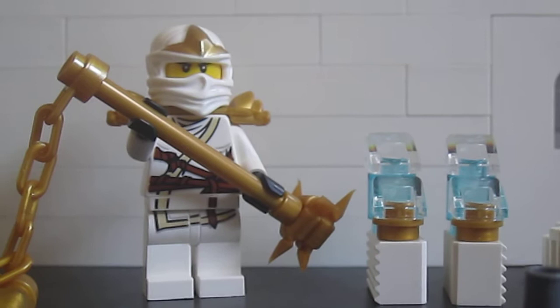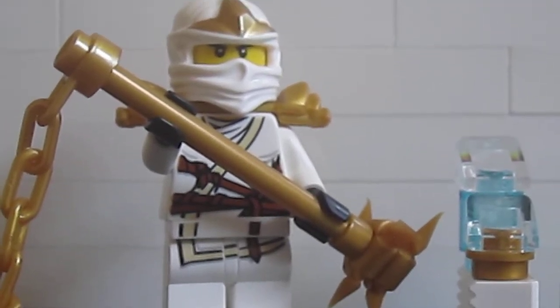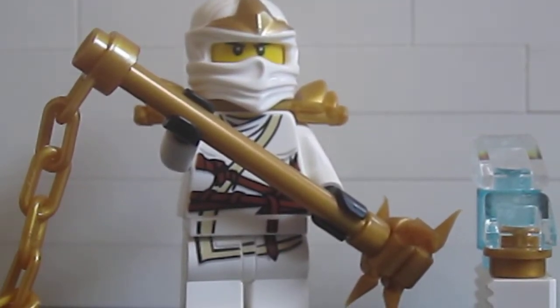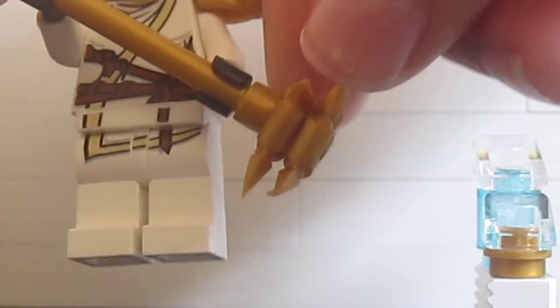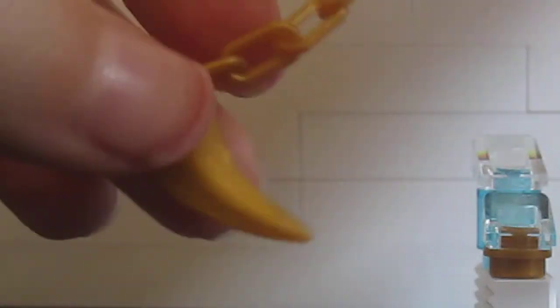And then comes Zane DX, I believe that's how you say it. He looks awesome. And this is another one of these weapons, this golden weapon, with his two ice throwing stars, I believe that's what they're called, with the blade at the end.